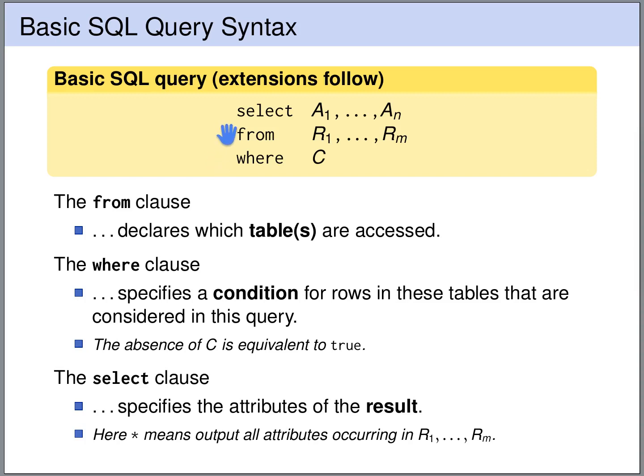The FROM clause tells what tables are accessed in this query. The WHERE clause gives a condition for the rows in these tables to be considered. If the WHERE clause is absent, it means that all of the rows are considered. And the SELECT clause tells what attributes we want to include in the output table.